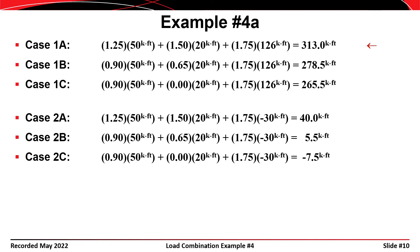For load case 2, the same three combinations are considered. The permanent loads create positive moments (50 and 20 kip-feet), but the live load plus impact creates a negative moment of negative 30 kip-feet. Because the signs are opposite, we end up with two critical values: case 2A gives the maximum positive moment, and case 2C gives the maximum negative moment. Both must potentially be considered.